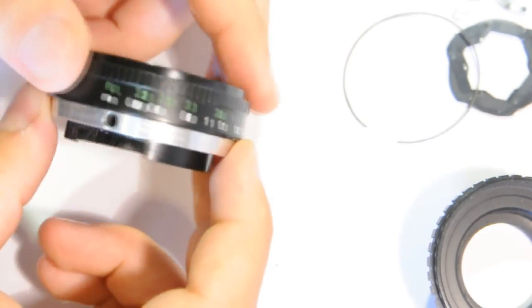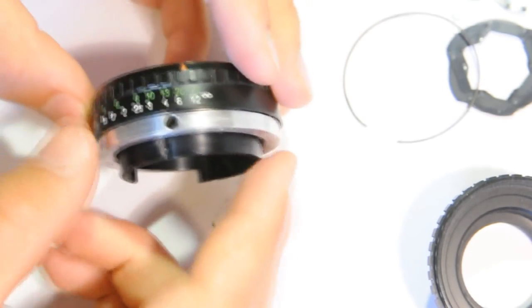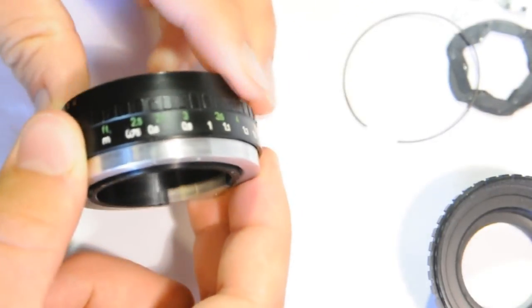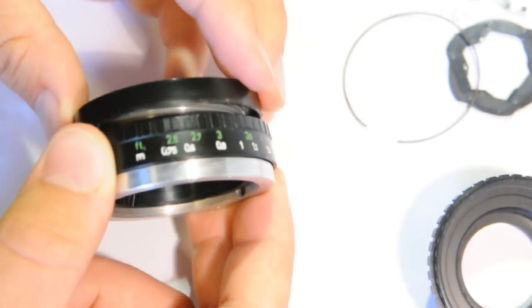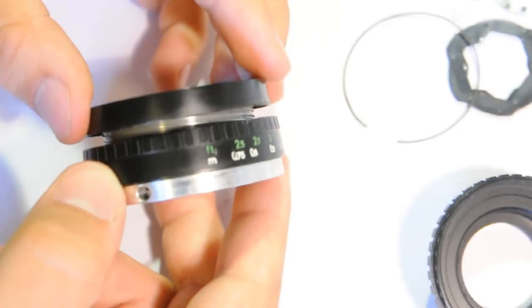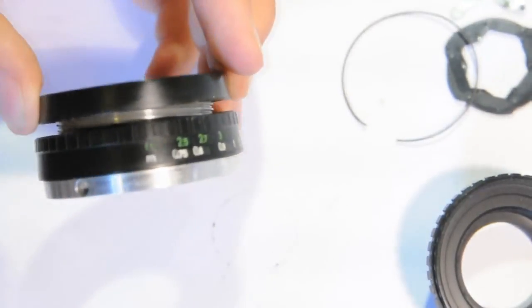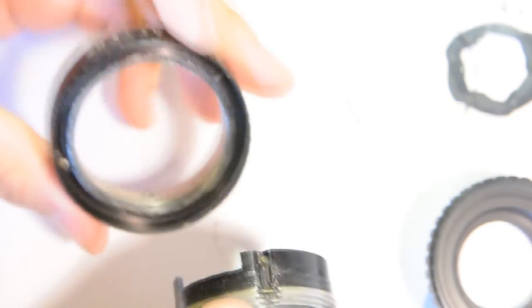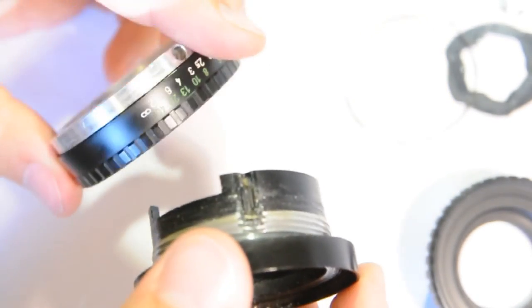So here you can see the focusing mechanism. It is activated by these two parts. You can see here as threads inside. Consists of these two rings and are connected by a thread.